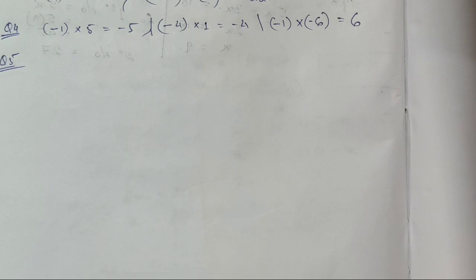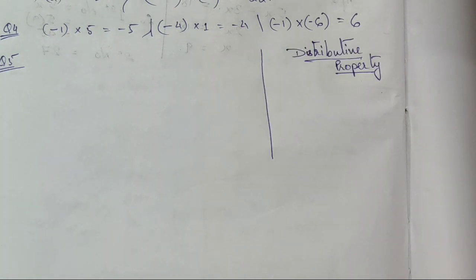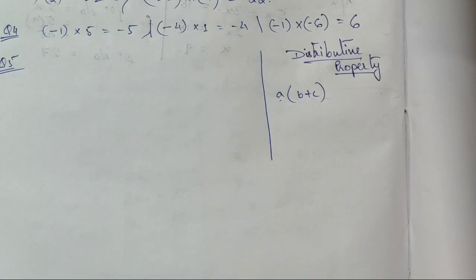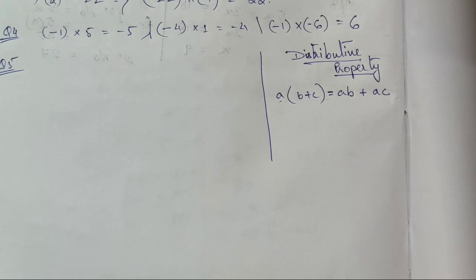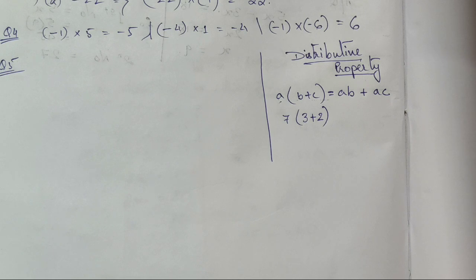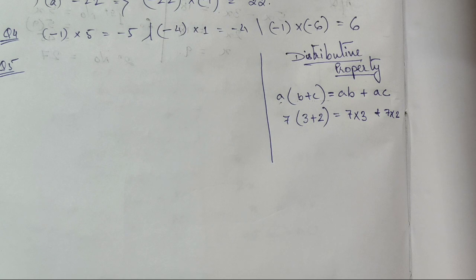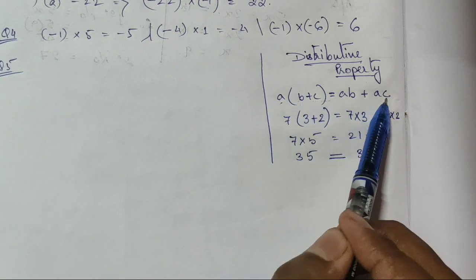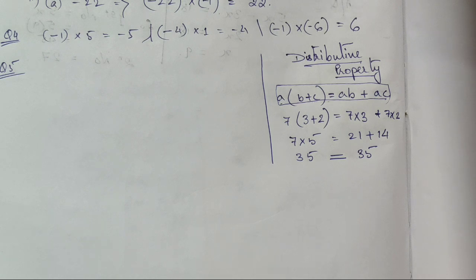Question 5 asks us to find products using suitable properties. Along with associative and commutative properties, we have the distributive property, which states that if a number is multiplied with a bracket, it is multiplied with each component inside. For example, 7 × (3 + 2) = 7×3 + 7×2. Both answers will be the same. We must use this property — we cannot directly multiply.